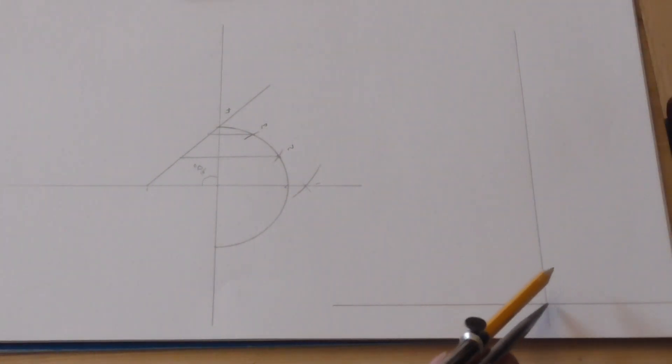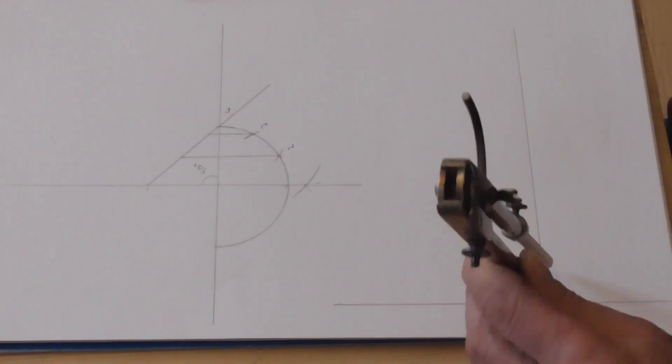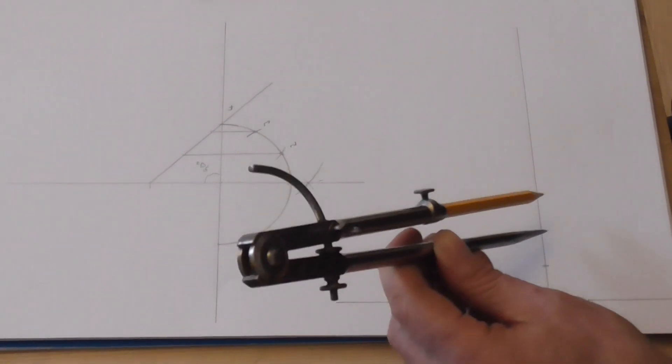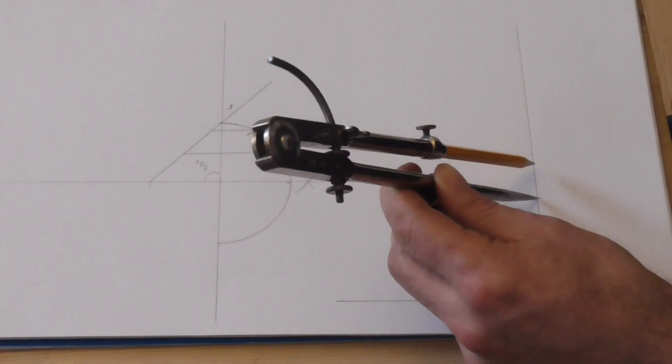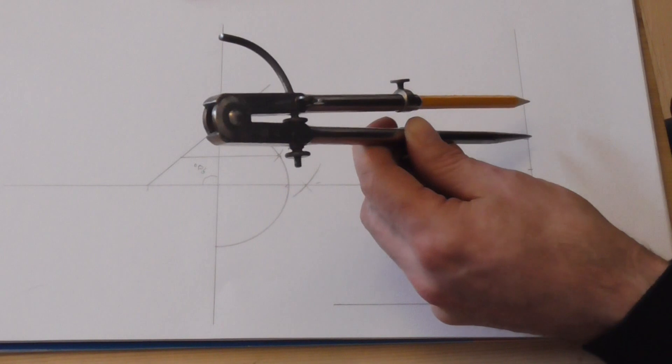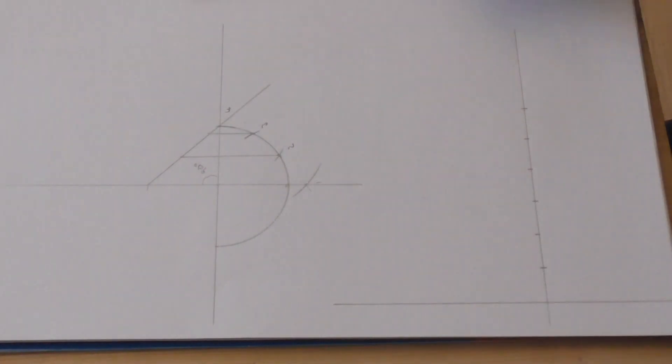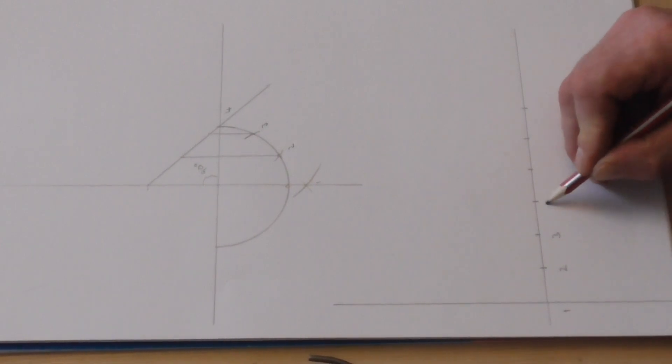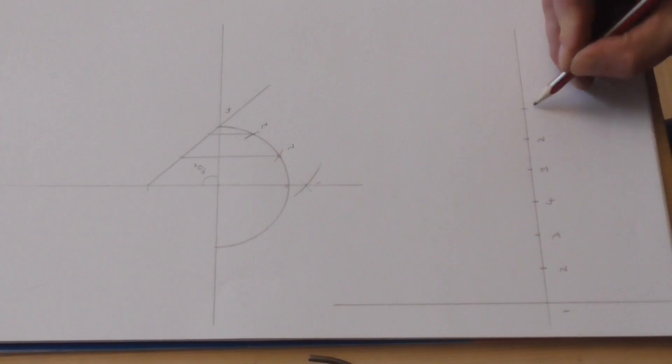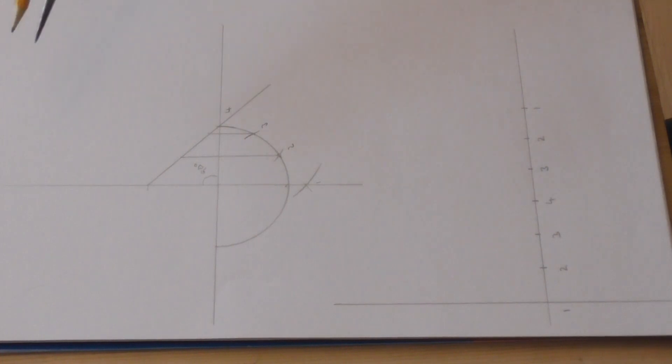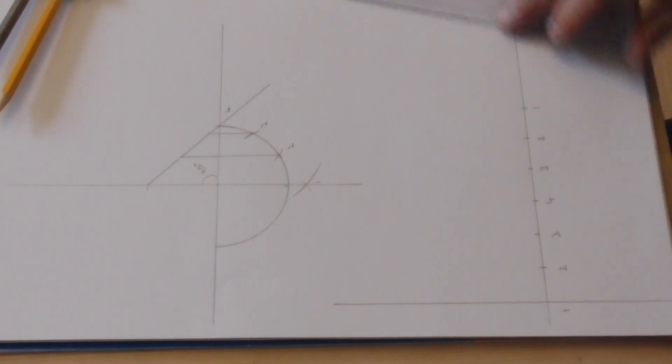This is number one. This is number two. Three. Four. Three. Two. One. So, we'll number these. One. Two. Three. Four. Three. Two. One. We can do this because as we're going around circumference of the pipe, the divisions repeat themselves. So, we can do it like this.